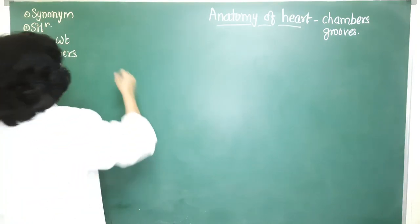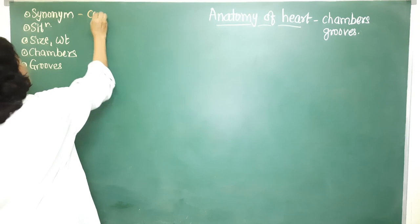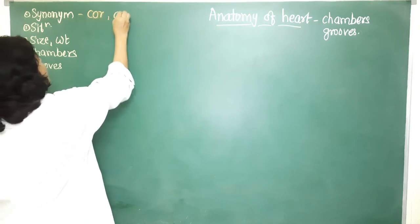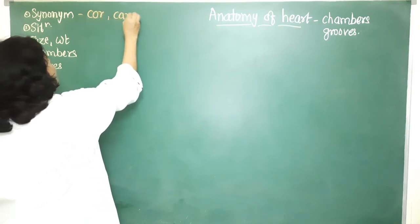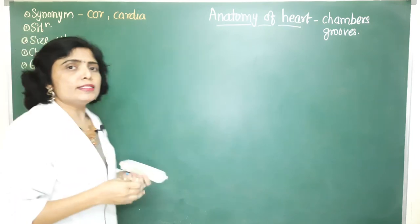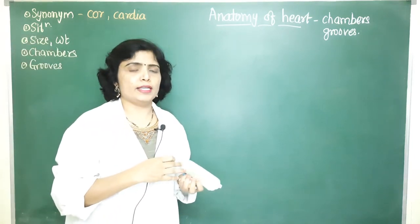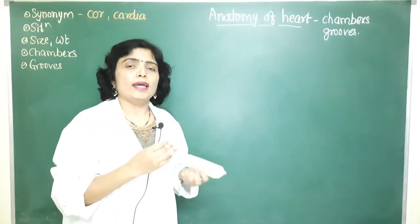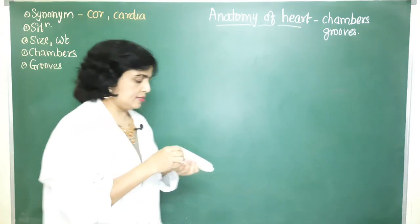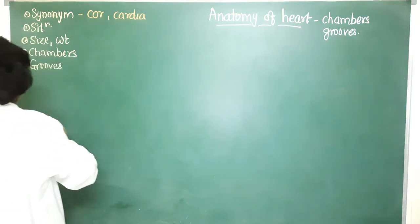The heart is also called as cor or cardia. Accordingly, the blood vessels supplying the heart are called coronary arteries and diseases of the heart are called cardiac diseases.